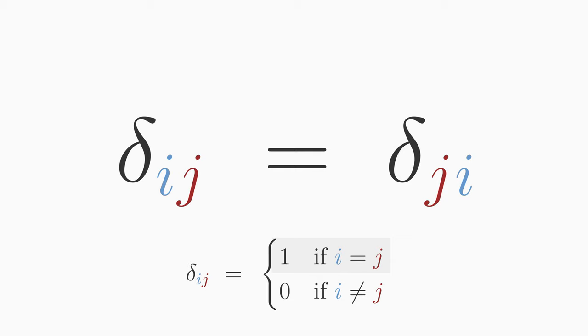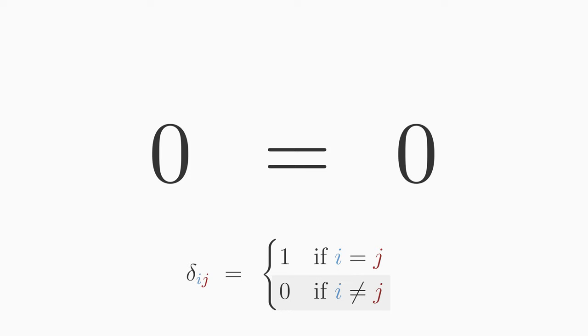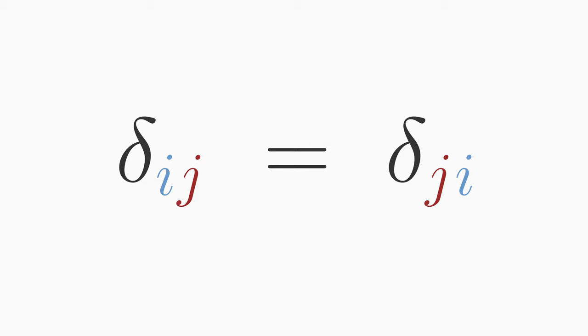Now let's learn some important rules using Kronecker delta. Rule number one. Indices ij may be interchanged. Delta ij is equal to delta ji. Why is that? According to the definition, if the indices i and j are equal, then delta ij is equal to 1, but then also delta ji is equal to 1. And if the indices are unequal, you have delta ij is equal to 0, and delta ji is equal to 0 as well. So you can see Kronecker delta is symmetric.